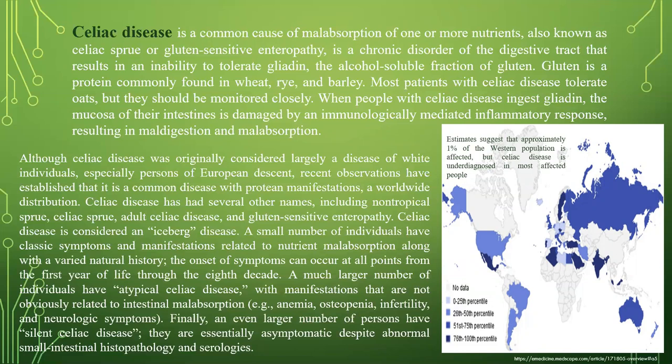Celiac disease was originally considered largely a disease of white individuals, especially persons of European descent. Recent observations have established that it is a common disease with protean manifestations and worldwide distribution. It has had several other names including non-tropical sprue, celiac sprue, adult celiac disease, and gluten-sensitive enteropathy. Celiac disease is considered an iceberg disease — a small number of individuals have classic symptoms and manifestations related to nutrient absorption.